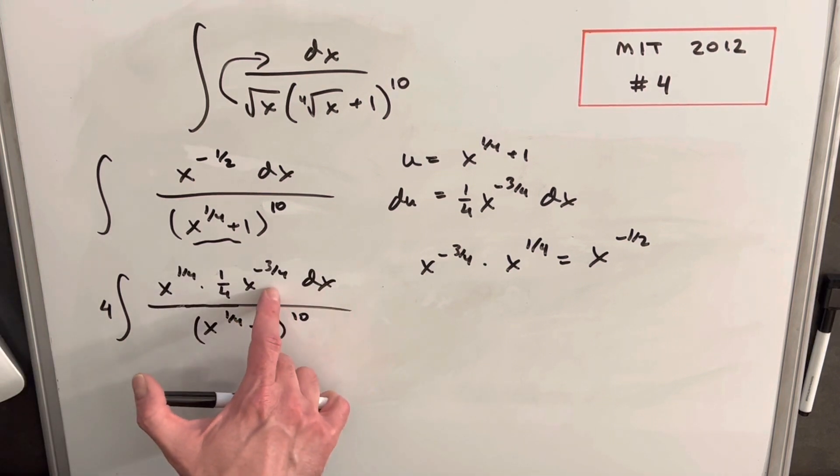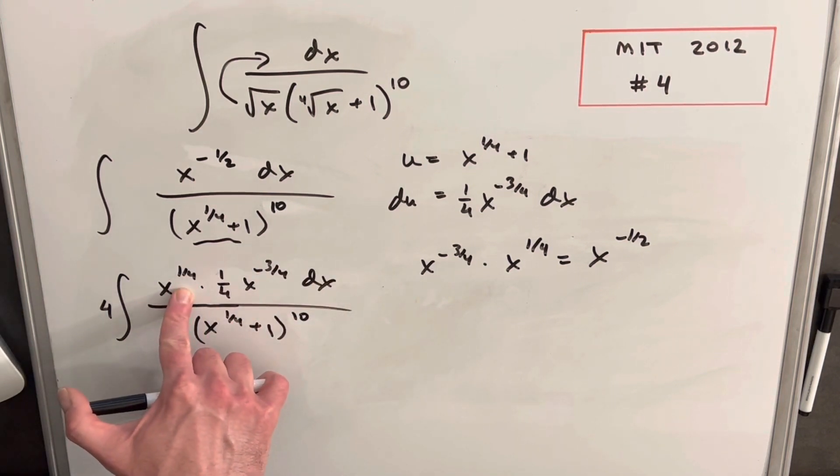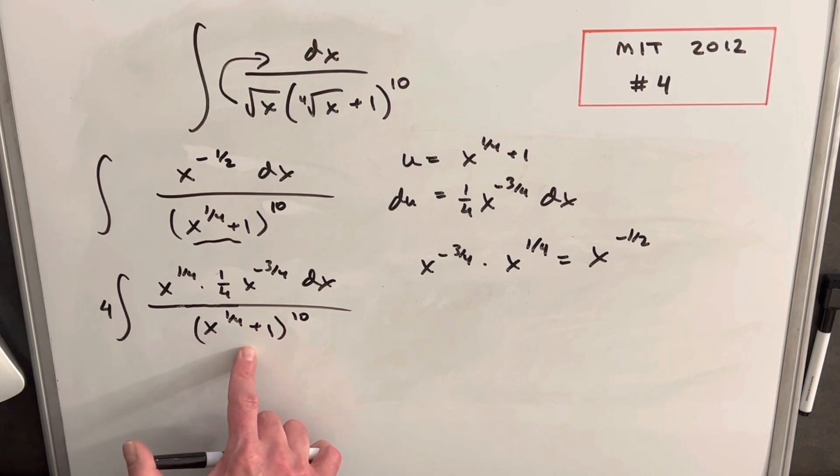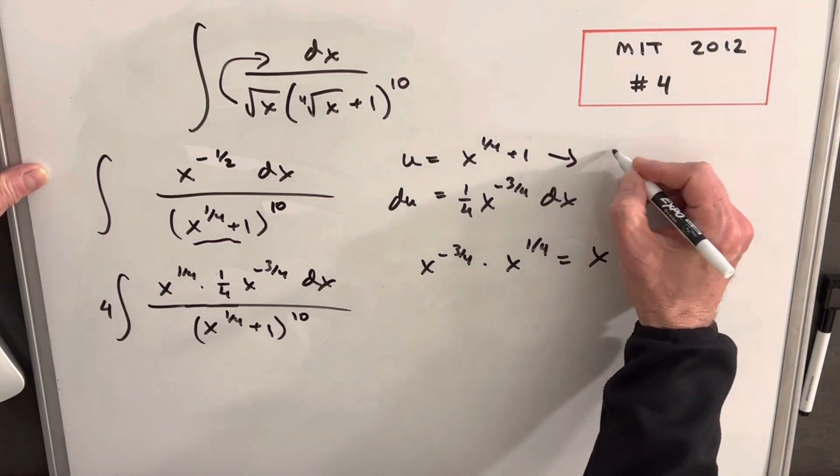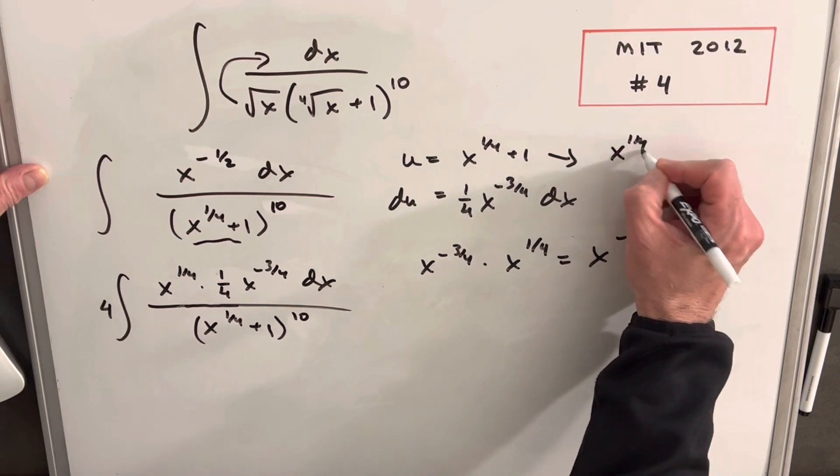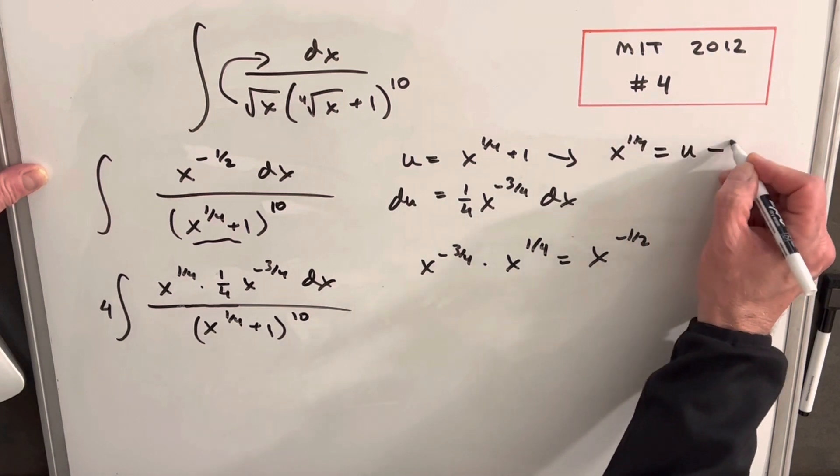Okay, so now that I've rewritten this where we have our du up here, and we have our x to the one-fourth, we're pretty much ready to make our u substitution. One thing I know for this x to the one-fourth, we can get a value for that right here just by subtracting one. x to the one-fourth is just going to be u minus one.